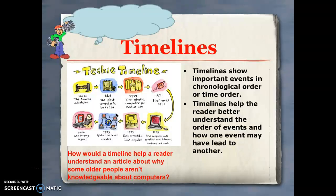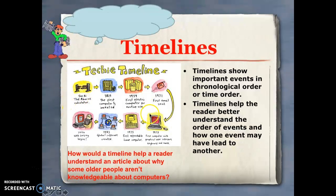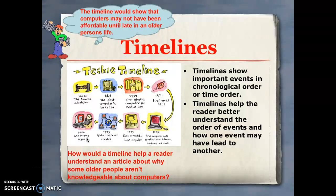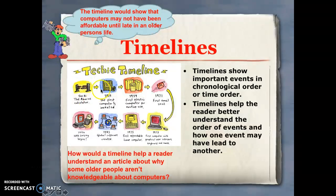Timelines are also very helpful text features when reading non-fiction stories. They show important events in chronological order, starting with the earliest event and ending with the most current. Timelines help us better understand the order of events and how one event may have begun and led to another. For example, if I didn't know the history of computers, I could look at a timeline and see that computers originated with the first calculator and end in 1994 with the first modern computer.